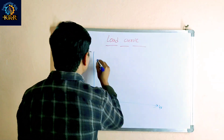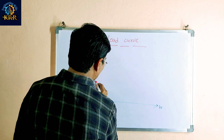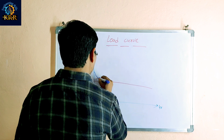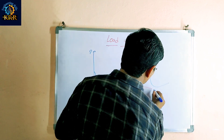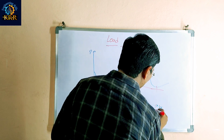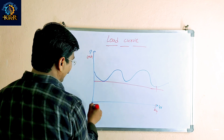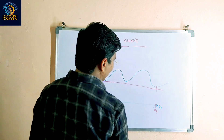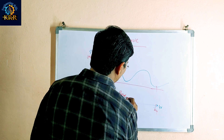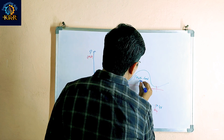In the graph, the x-axis represents hours and the y-axis represents power in megawatts. This covers the last 24 hours, from zero hours to 24 hours. The lower region of the graph is called the base load area, and the upper region is called the peak load area.